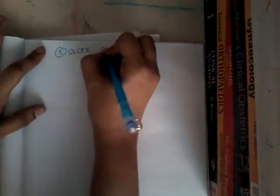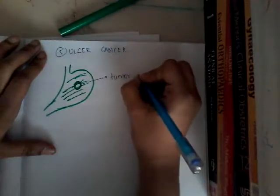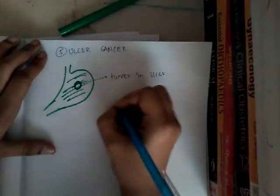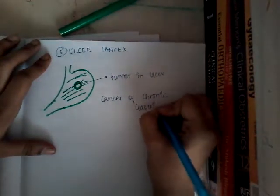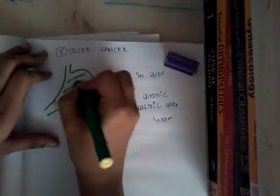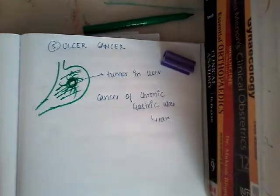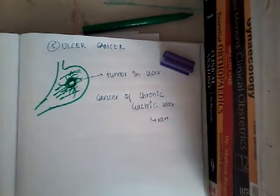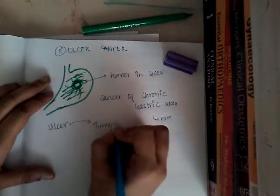The fifth type of cancer is ulcer cancer. In ulcer cancer, you have a tumor and within the tumor there is an ulcer — sometimes there may be development of cancer in a chronic gastric ulcer, which is rare. Basically, the ulcer is giving rise to the tumor. In ulcerative carcinoma, there is a tumor and later the edges breach resulting in an ulcer, but here in ulcer cancer, an ulcer transforms into a tumor — so ulcer gives rise to the tumor.